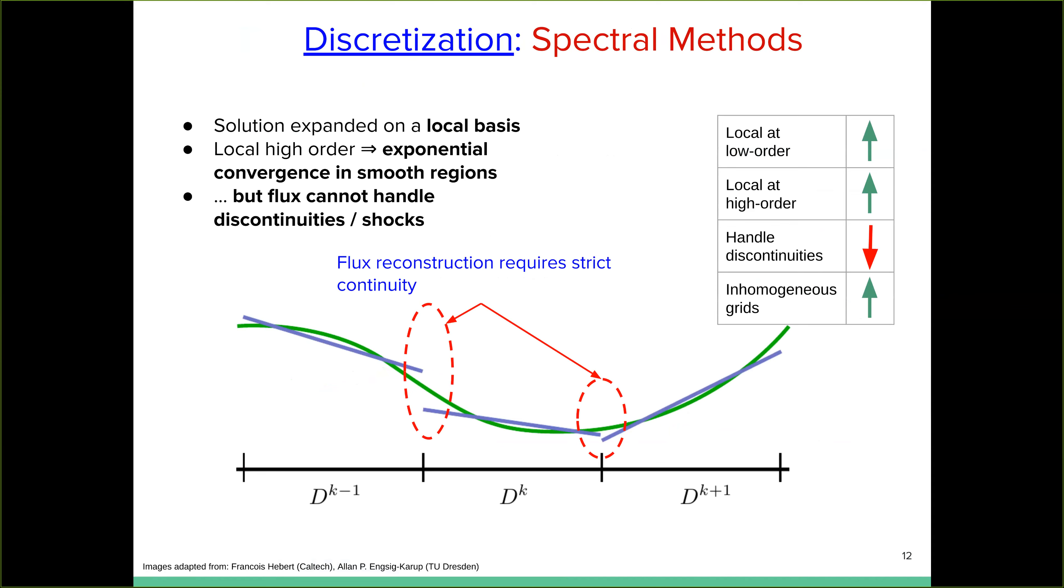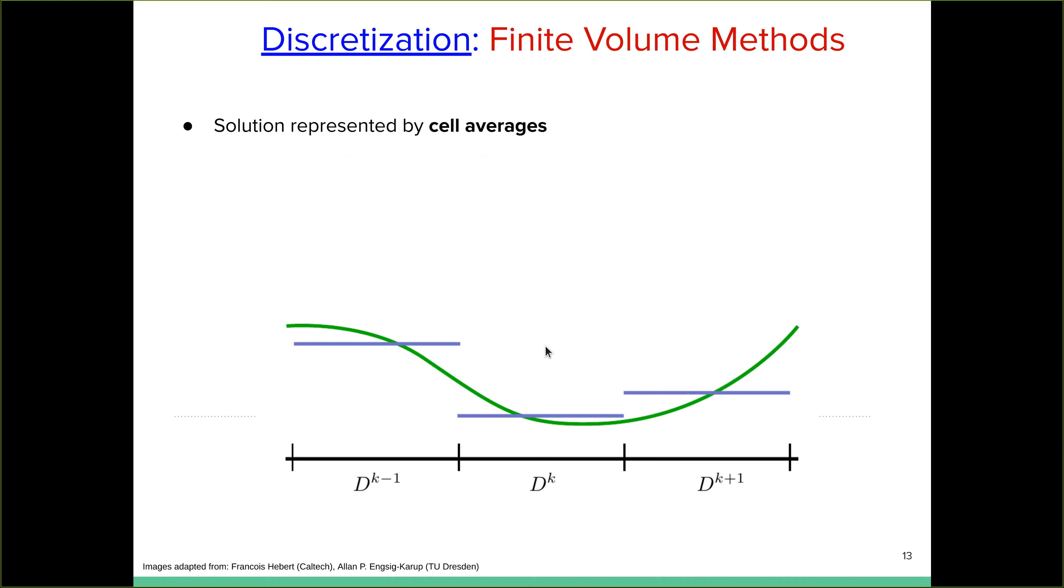Right. So SpEC, while it has locality at low order, locality at high order, it can handle inhomogeneous grid. It really can't handle discontinuities. Right. And another important thing of spectral method is that your derivatives come for free. All your spatial derivatives are free and exact. There is no numerical error because your, I mean, your solution is expanded in basis functions. So your derivative operator only acts on the basis functions.